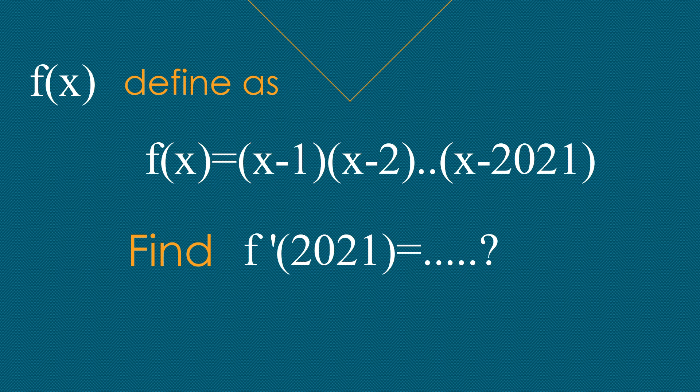Since we know that f(x) equals (x-1)(x-2) until (x-2021), and we want to find the derivative in terms of 2021, let's find the answer together.